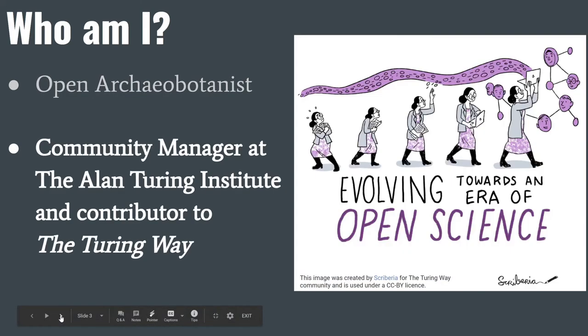I usually work as an independent postdoctoral researcher in collaboration with a number of different organisations such as Historic England and the Botanical Society of Britain and Ireland. But at the moment, I am working in a short-term role at the Alan Turing Institute as a community manager for the DeCOVID project. This is a project that aims to use reproducible workflows to examine patient data from a number of hospitals to answer important questions about COVID-19. I am also a contributor to the Turing Way and have taken part in the last book dash to write a chapter for the guide to collaboration on getting started with GitHub.